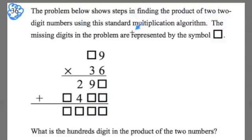The problem below shows steps in finding the product of two two-digit numbers using this standard multiplication algorithm. The missing digits in the problem are represented by the symbol box. It says, what is the hundredths digit in the product of the two numbers? Now you read it to yourself.